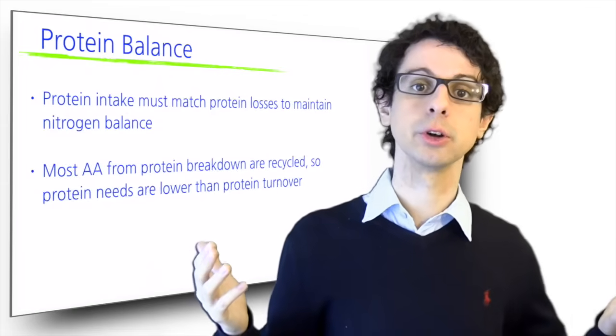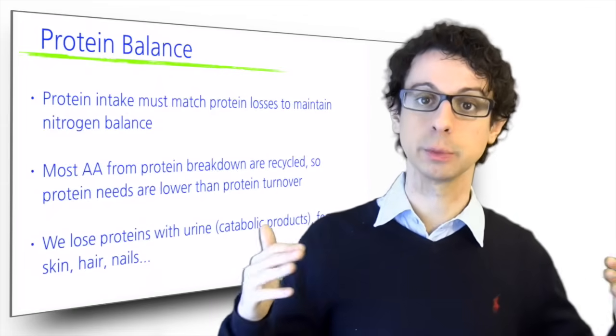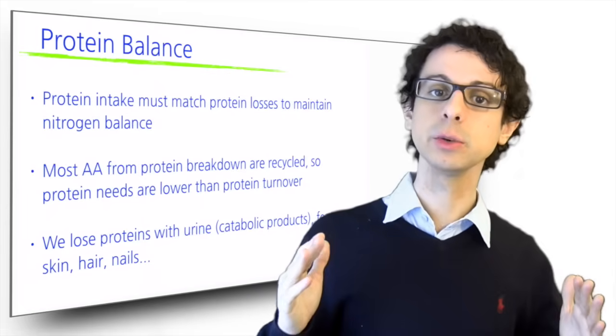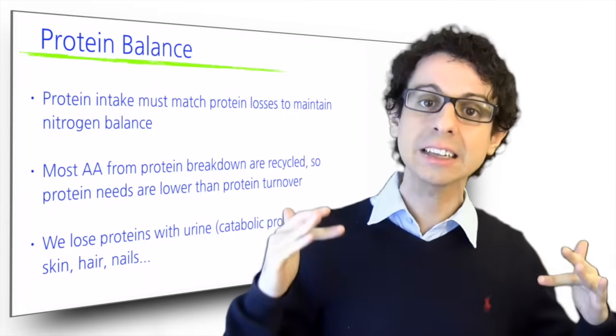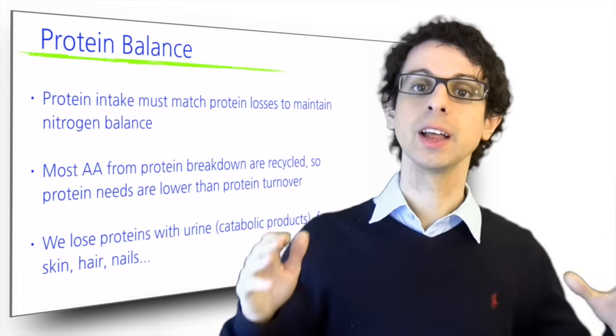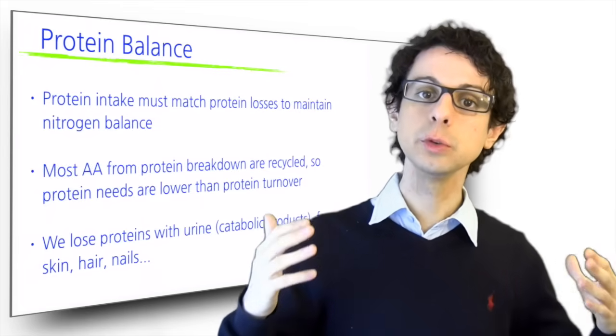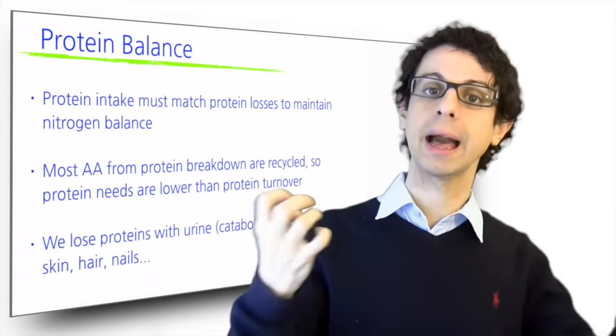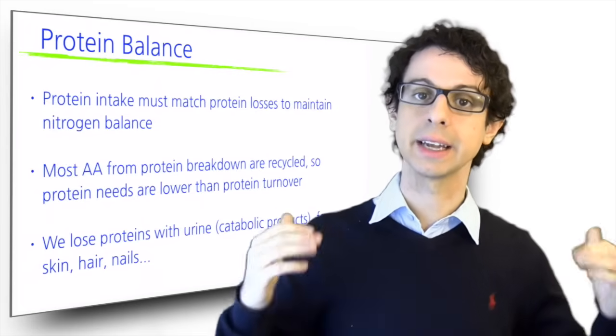So we cannot use protein turnover to determine how much protein we need to eat, and the way we do it instead is we just want to match the protein we lose with the protein we eat. We want to make sure that the amount of protein we lose or catabolize, we bring back in, so that we maintain nitrogen balance.